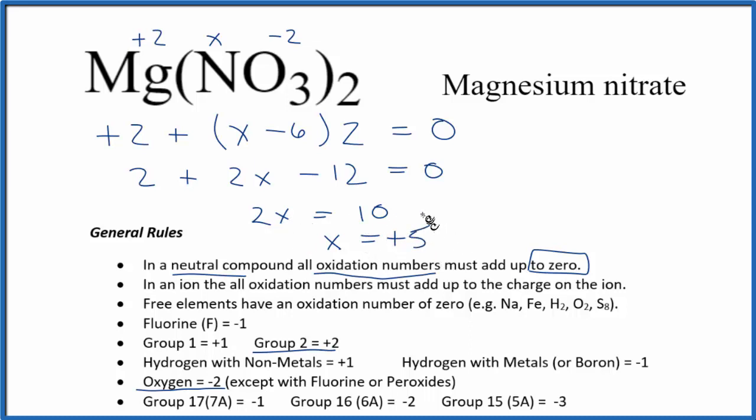So this is the oxidation number on this nitrogen here. Let's write that in. We have +5 as our oxidation number.